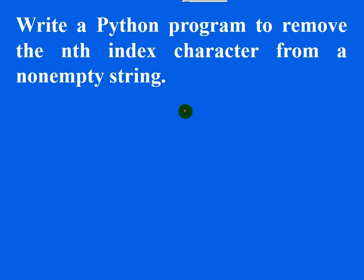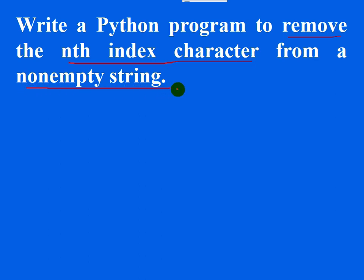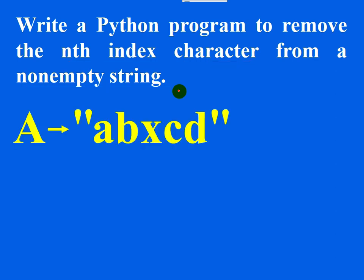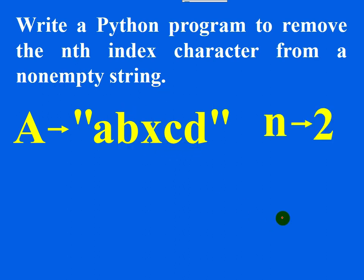This is a programming question based on strings. Write a Python program to remove the nth index character from a non-empty string. You need to write a function and build the complete program around it. For example, suppose your string 's' points to 'abxcd' and your n is 2, meaning you want to remove the nth index character from this string.